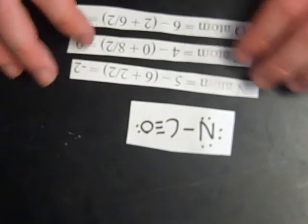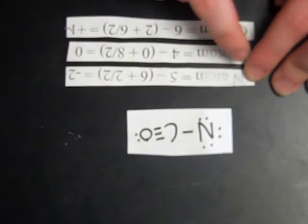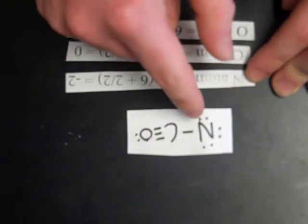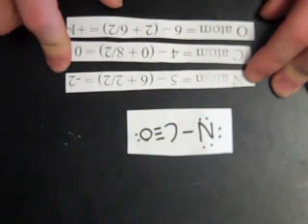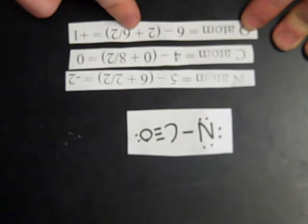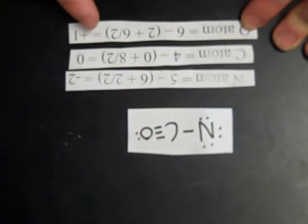Now we check the next structure. We calculate the formal charges on this one. The N atom has a negative two charge: five minus six unshared, plus two over two because of the bond to carbon. Carbon has four minus zero unshared, plus eight over two because it has four bonds, giving it a zero charge. The oxygen atom has six minus two unshared, plus six over two because it has three bonds, giving it a plus one charge. Adding all these together still gives an overall charge of minus one.